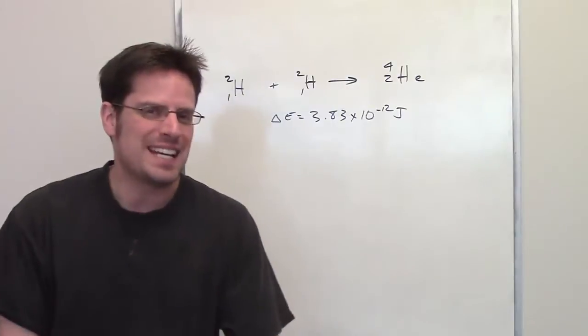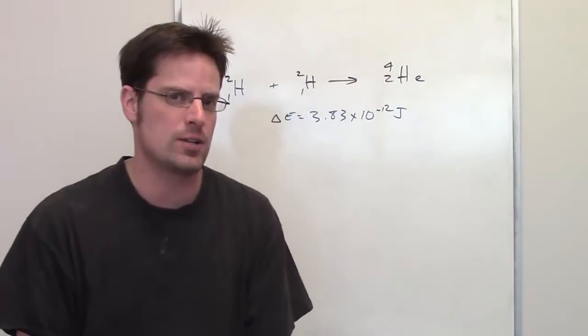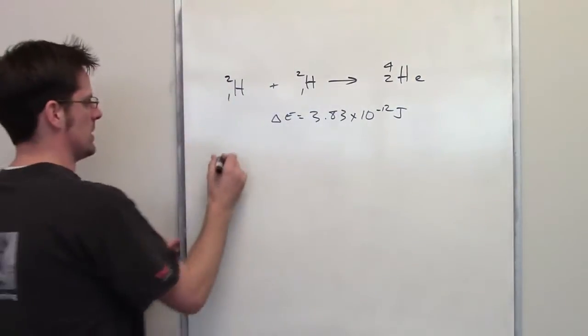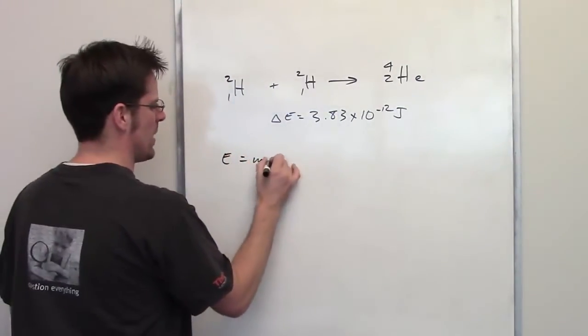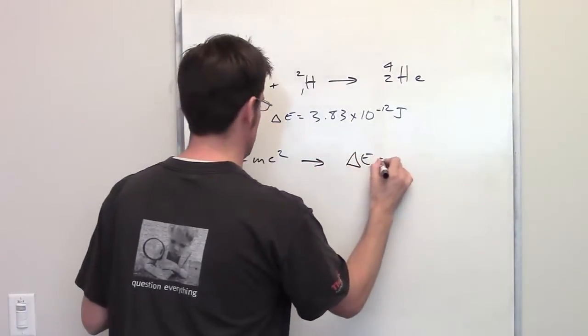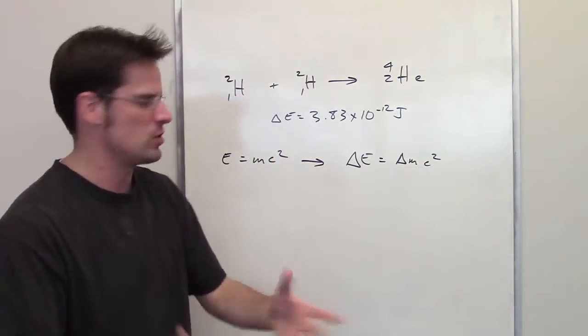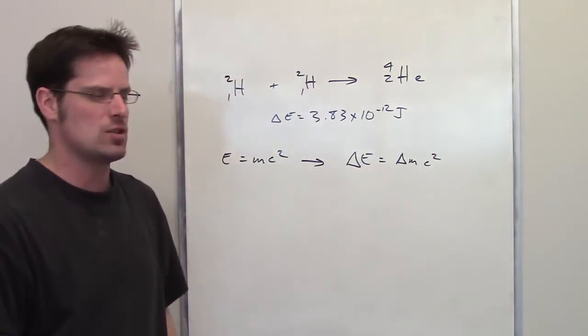It then asks me to calculate what the total change in mass in kilograms is for this reaction. To do this, we're going to use the equation E equals MC squared. You can modify that to be delta E equals delta M times C squared. C being the speed of light doesn't change, but the mass, that can change.